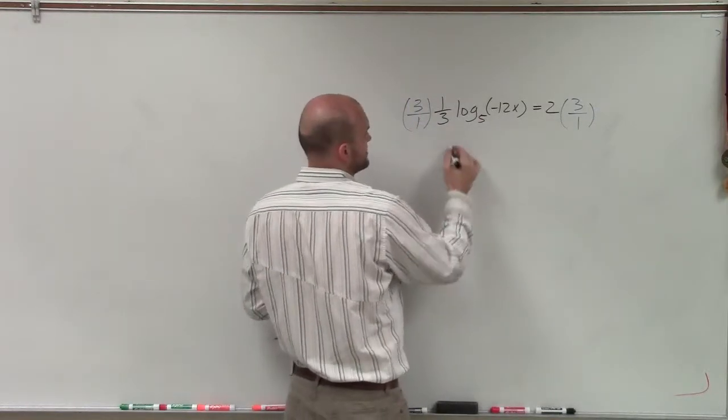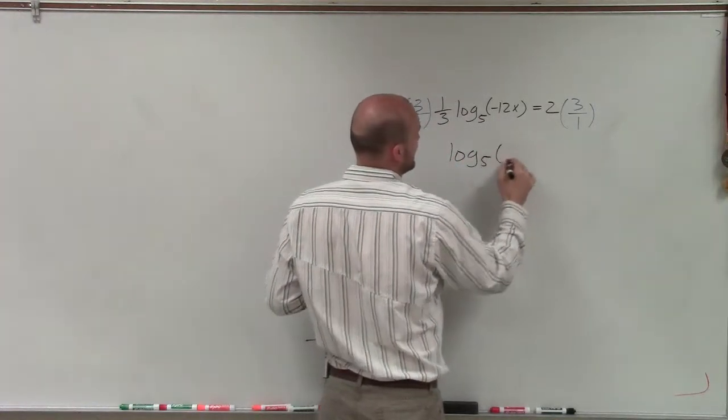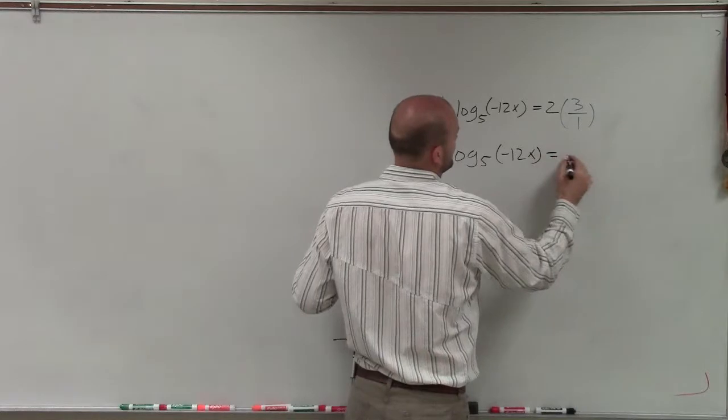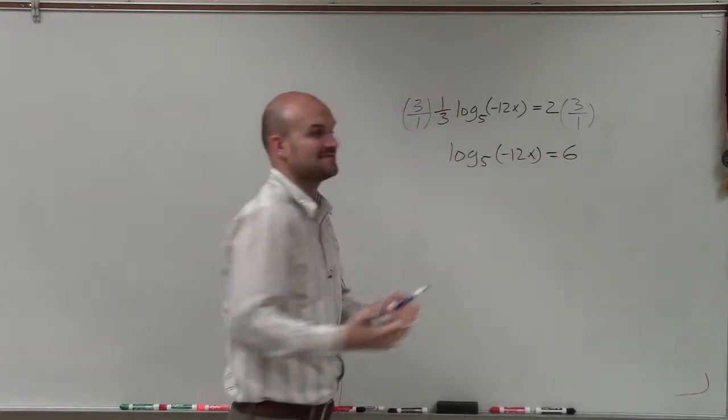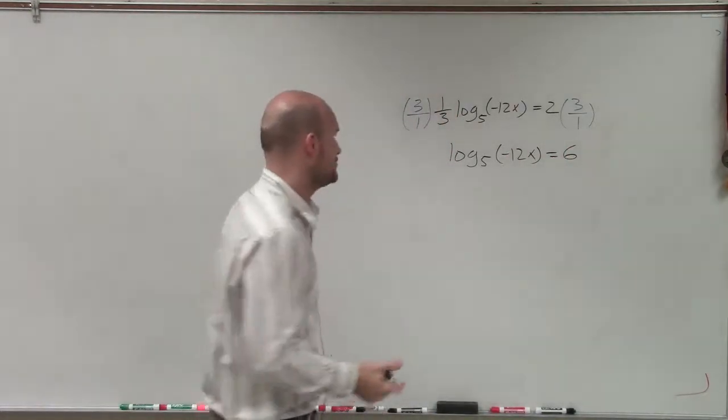Now, 2 times 3 over 1 is just going to become 6. So therefore, I have log base 5 of negative 12x equals 6. Now, I have something that I can convert to exponential form.